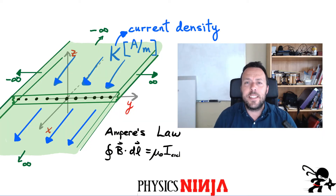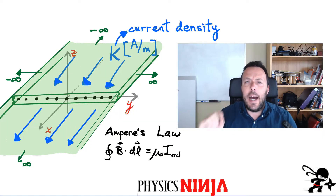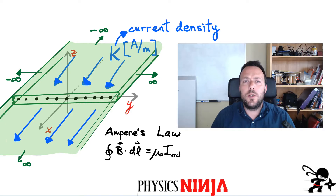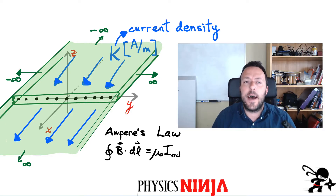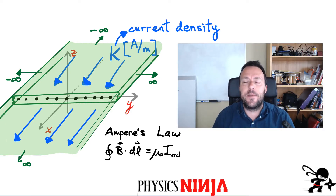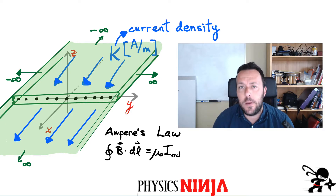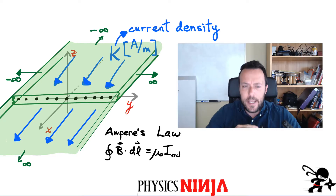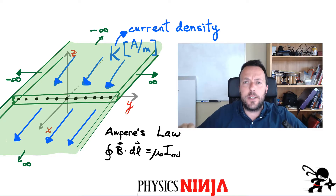Hi everybody, Physics Ninja here. Today we're going to look at how to use Ampere's law in order to find the magnitude and direction of the magnetic field produced by an infinite current sheet.